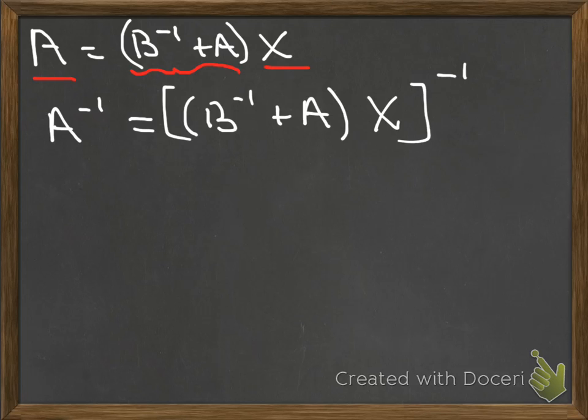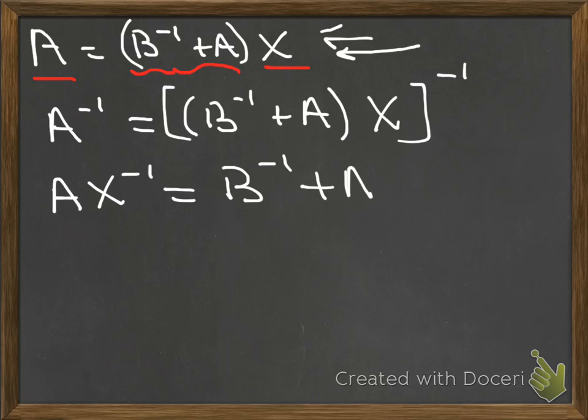How can I convince myself that B^(-1) plus A is invertible? Well, if I were to take the expression and solve for X... I want to take another direction here. I'm going to look up here again and I'm going to see that A times X^(-1) is equal to B^(-1) plus A, and notice that